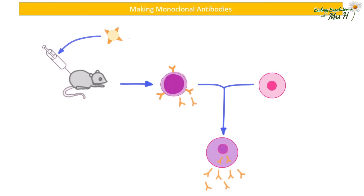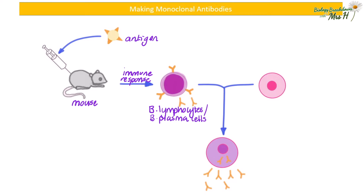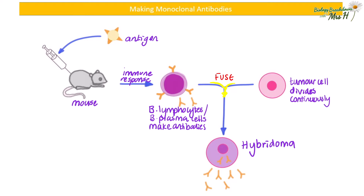Let's have a look at how they make monoclonal antibodies. Unfortunately mice are usually used for this process so there are ethical issues. The mouse will be injected with an antigen and will have an immune response to that antigen, therefore producing lots of white blood cells. The lymphocytes are the white blood cells that are needed and they have to be extracted from the mouse. The correct lymphocyte making the right antibodies is selected, and then it is fused with a tumour cell because tumour cells can divide continuously. This fusion results in a special cell called a hybridoma, which has the properties of both: it can make lots of antibodies and divide continuously.